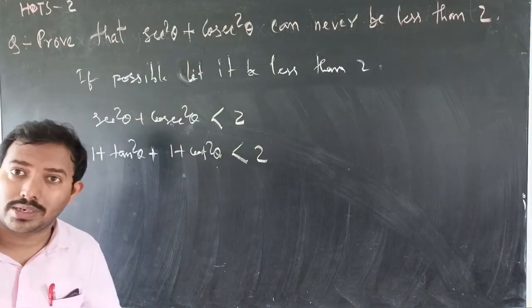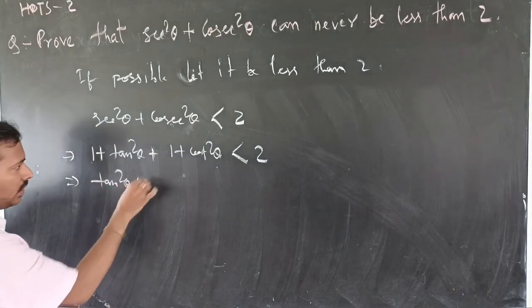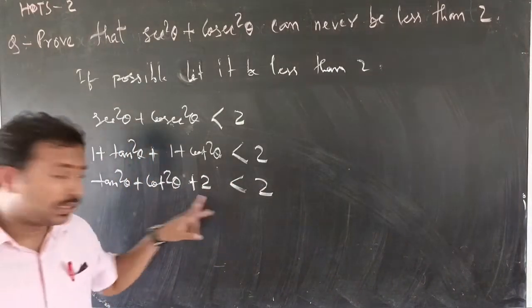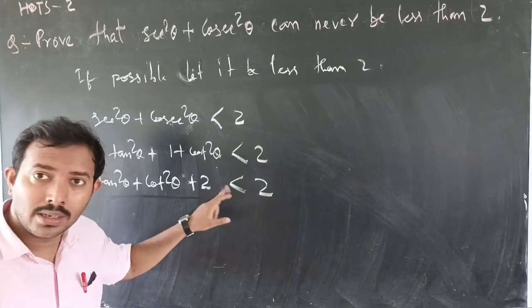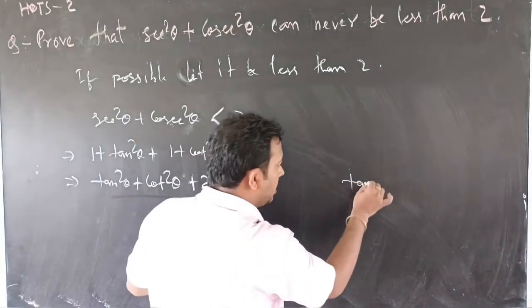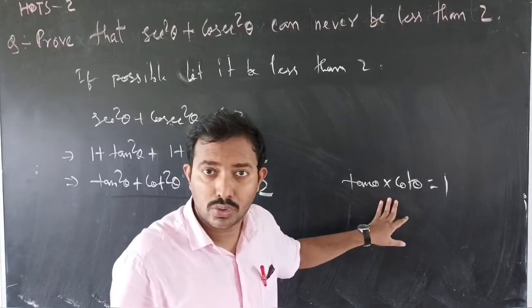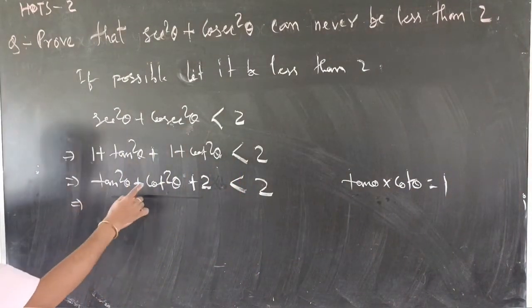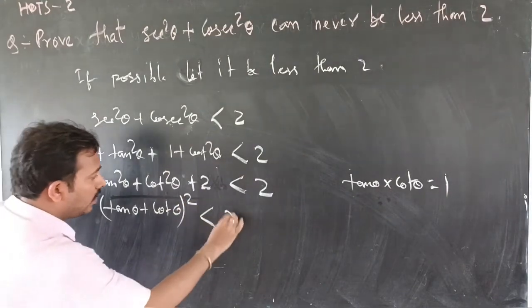Note that tan and cot are reciprocal to one another, and 1 plus 1 gives you 2. So we write tan squared theta plus cot squared theta plus 2, which gives the formula a squared plus b squared plus 2ab. Here a is tan theta and b is cot theta. Since tan theta times cot theta equals 1, we can write this as tan theta plus cot theta, whole squared.